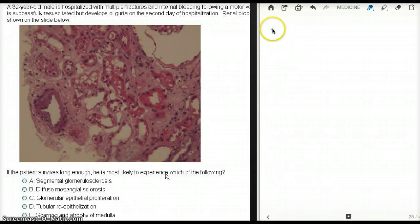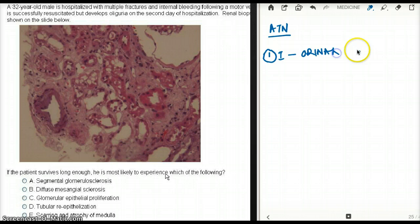So now let's talk about what are the different stages of ATN. ATN really has three stages. The first stage is called the initiation stage. At the initiation stage is where the original insult happens. In this case, the original insult was ischemia.